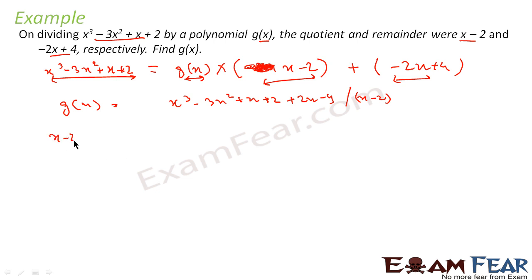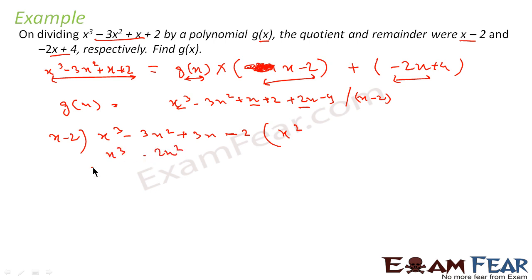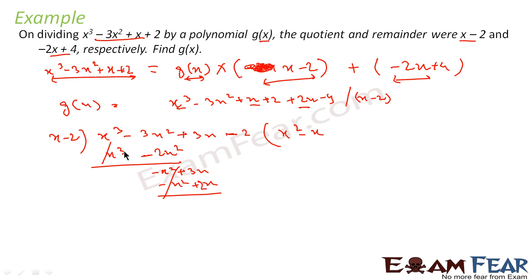Performing the division: dividing x³ by x gives x². Multiply x² by (x − 2): x³ − 2x². Subtracting gives −x² + 3x. Divide −x² by x to get −x. Multiply −x by (x − 2): −x² + 2x. Subtracting gives x − 2. Divide x by x to get 1. Multiply 1 by (x − 2): x − 2. This cancels, leaving quotient x² − x + 1.